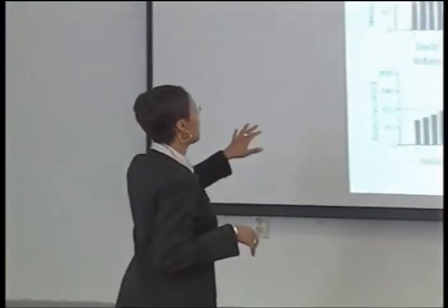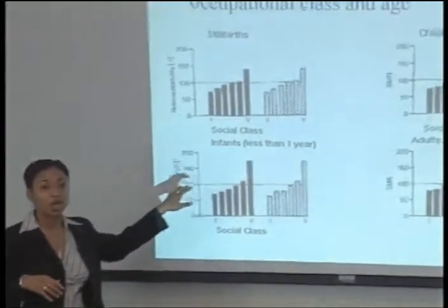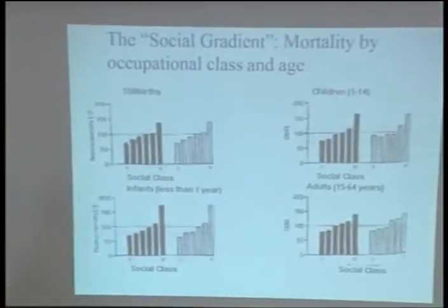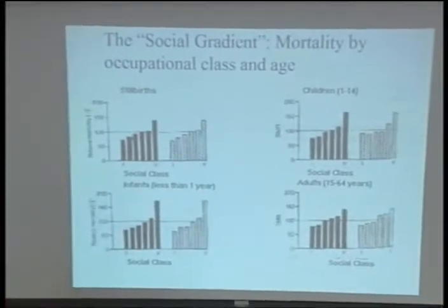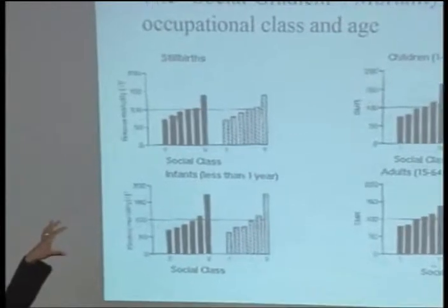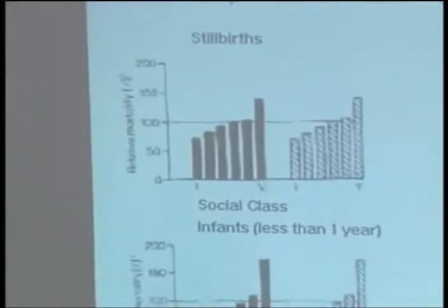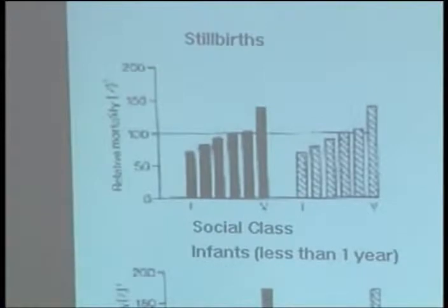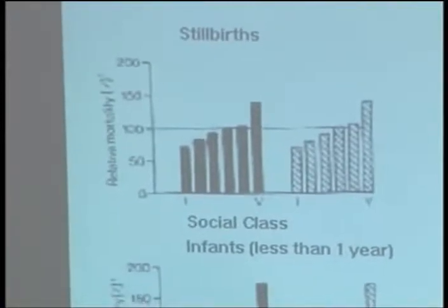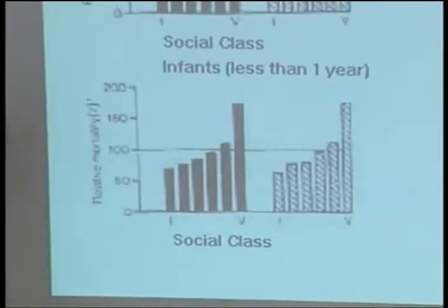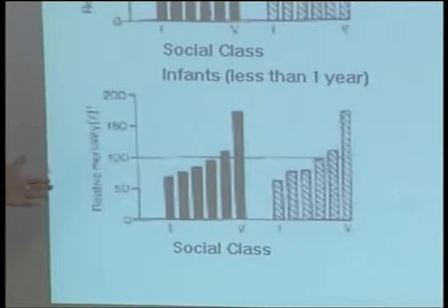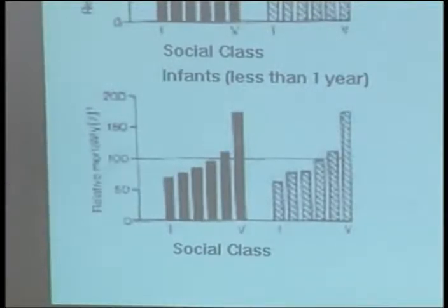This slide shows data from the Black Report. We're looking at the relationship between social class, indicated here by occupational grade — the British system of social hierarchy going from grade one to grade five, with five being the lowest and one being the highest. On the x-axis, the horizontal axis, is social class, i.e. occupational grade. On the y-axis, the vertical axis, is probability of death or mortality rate. There are a couple of things I want to point out in this slide.